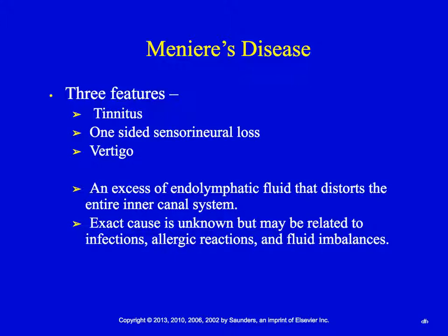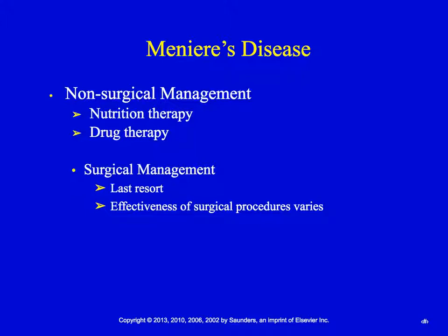The vertigo is extreme — it feels like the room is spinning. Patients have difficulty ambulating because they're so dizzy. It's very intense and typically they have to lay down. It can also cause nausea and vomiting. Treatment for Meniere's disease can be nutrition therapy or drug therapy.